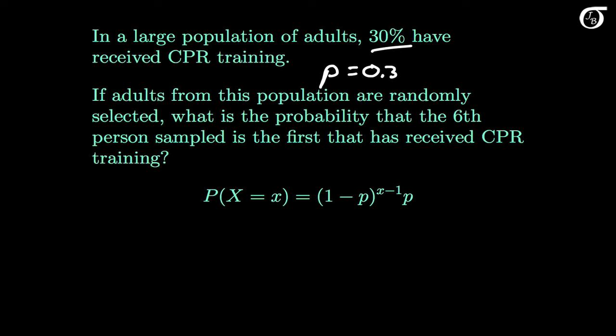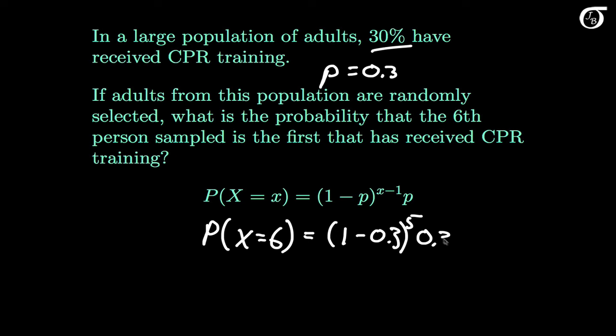Using the probability mass function, we want the probability that X equals 6 — the probability the first person with CPR training occurs on the 6th person sampled. This equals (1-0.3)^5 times 0.3. We need the first 5 people to not have CPR training, and then the 6th to have it. This works out to 0.0504 when rounded to 4 decimal places.